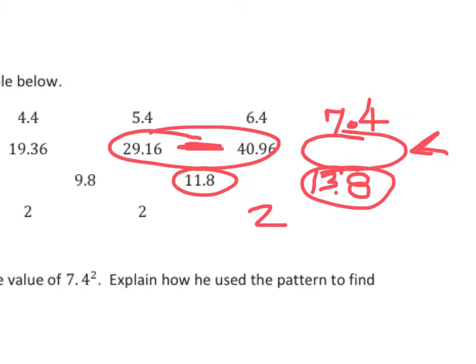So to find out what number would be over here, would we do 40.96 minus 13.8 or would we do plus? You would add them together. So what is 40.96 plus 13.8? Oh, it's 54.76.